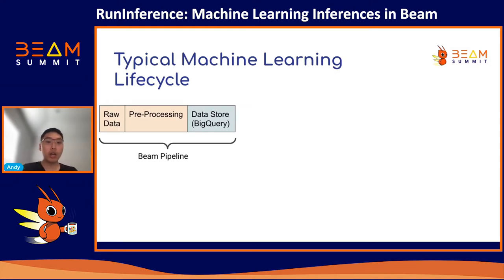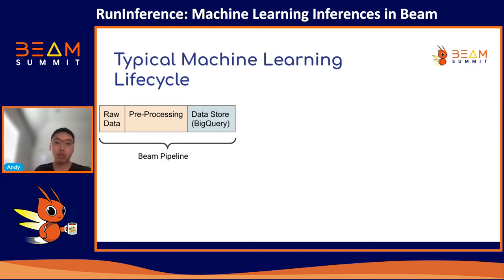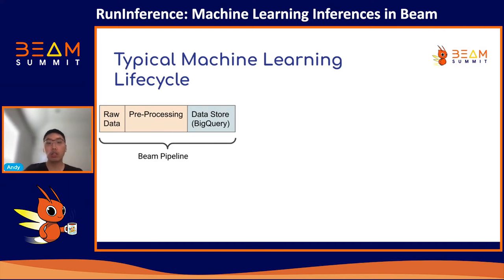Let me begin by describing at a high level what a typical machine learning lifecycle looks like and how Beam fits into this picture. For machine learning training, you would typically begin with some raw data as inputs, do some pre-processing, and then store the training-ready data into some sort of intermediate data store like BigQuery. This can be easily facilitated with a Beam pipeline. In fact, this is already done by TFX, TensorFlow Extended, as they build their own pre-processing layers on top of the Beam library.